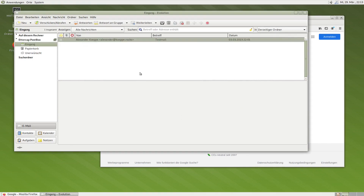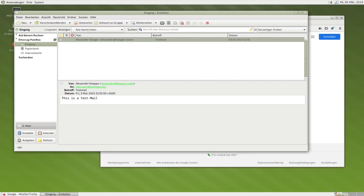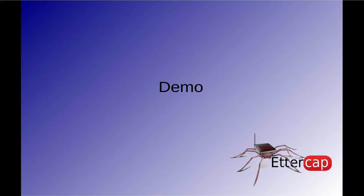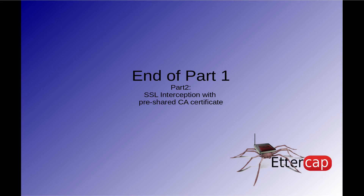That was the demo. I'm switching back to the main screen. Thank you for watching — I'll see you in my next part of the SSL interception series. The next part will cover how to do SSL interception with a pre-shared CA certificate that we generate ourselves, in order to intercept SSL traffic to strongly protected websites like Facebook and Google. I'll show that in the next video. Thank you for watching, take care and bye.